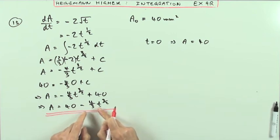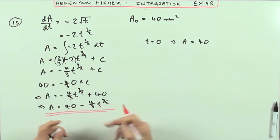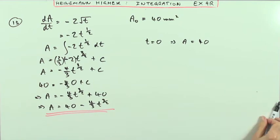Here's the formula for it. It starts off at 40 and then gradually more and more comes off until eventually—that's the next part of the question. Part B.